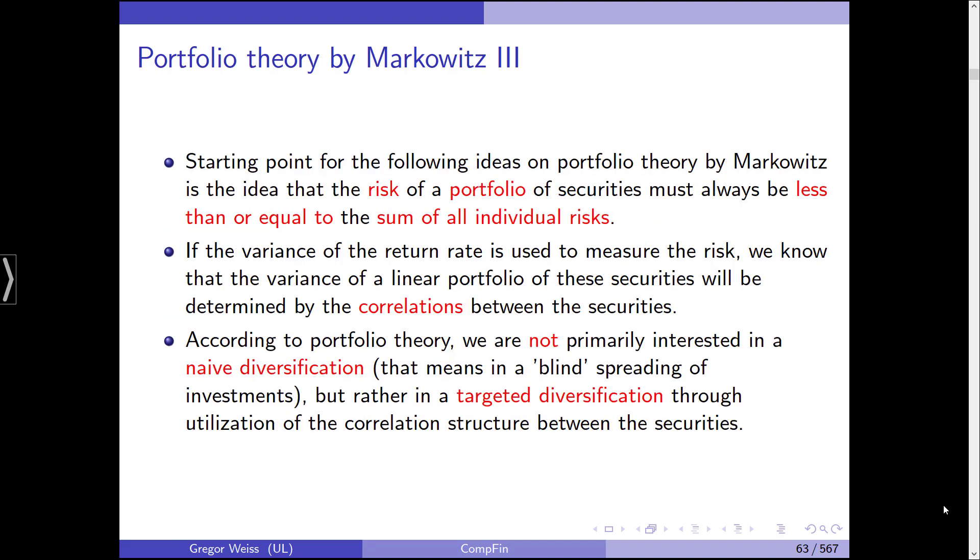Starting point then is the idea that the risk of a portfolio of securities must always be less than or equal to the sum of all individual risks. Now, if you were to put 50% in Microsoft and 50% in Tesla stock, there should be an upper bound, a limit to the overall risk you are taking. And mathematically speaking, that should be the sum of the individual risks.